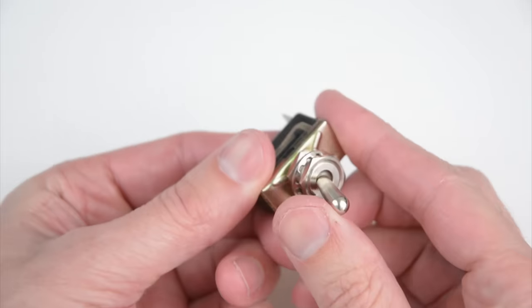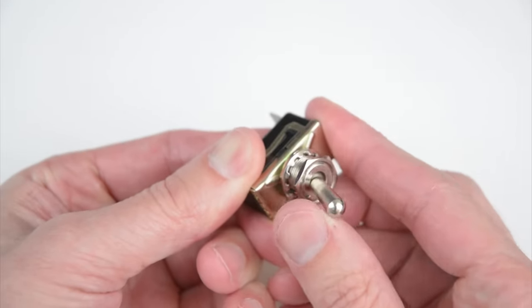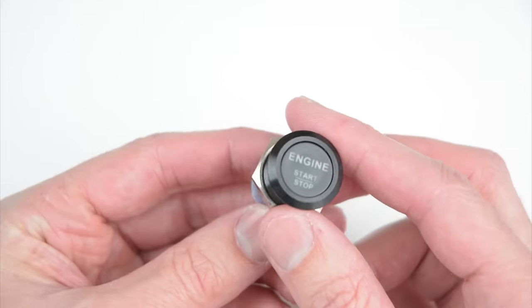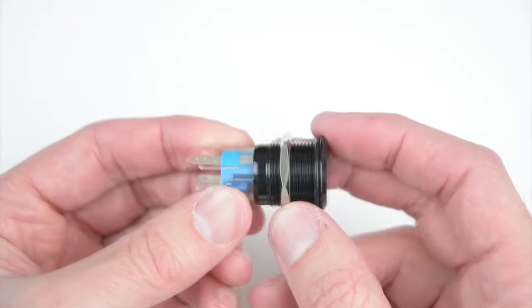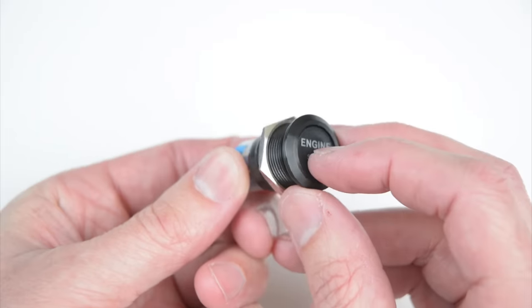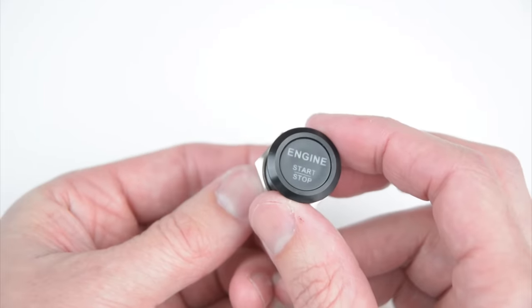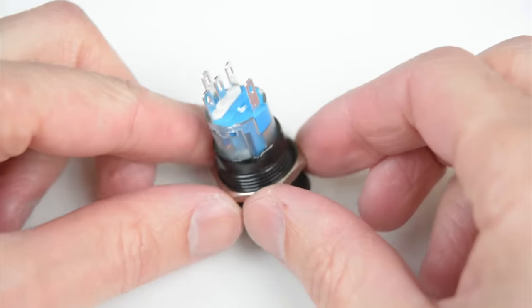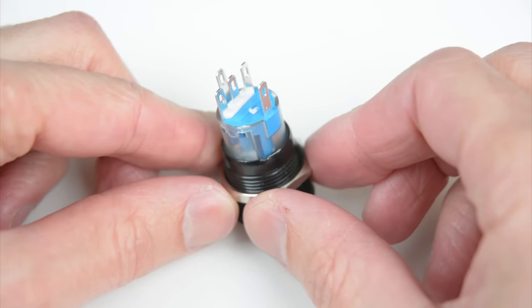Another option to use instead of the key system is to use a momentary toggle switch or a momentary push start-stop switch. This particular engine start-stop switch has an LED light inside which can also be connected to be illuminated. At the back of the switch are the five wiring terminals.